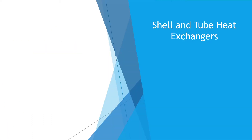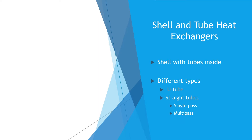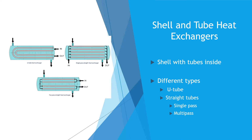Shell and tube heat exchangers are also popular, especially in industry. They are literally shells with tubes inside of them; the fluids flow through the tubes. The tubes can either be in a U-shape, shown in the first image, or straight. Shell and tube heat exchangers with straight tubes can either be single-pass, where the fluid goes in one end of the tube and out the other, or multi-pass, where the fluid enters and exits on the same side.